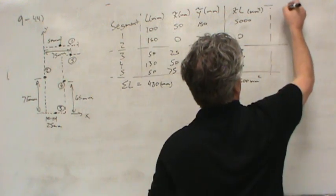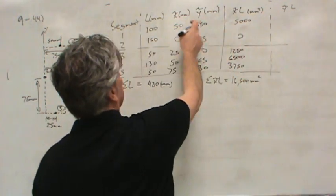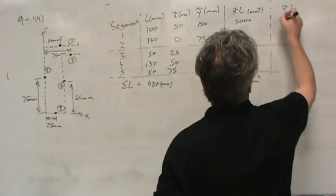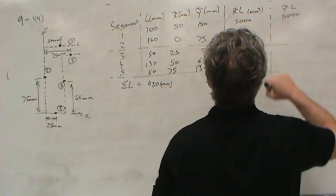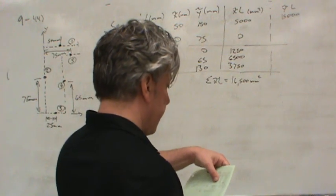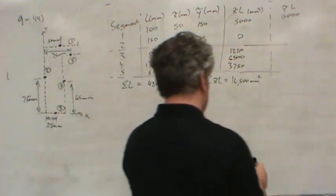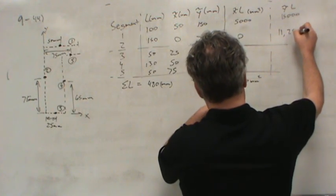The next thing to do is to calculate y-tilde L. So L times the y-tilde column, 100 times 150 would be 15,000, if I'm thinking right. Yeah, 15,000, or 150, 100 is another way to say it. Multiplying each column, or each element, each row of each column, you'll get 11,250, zero.